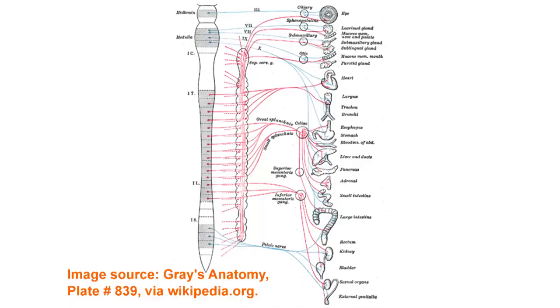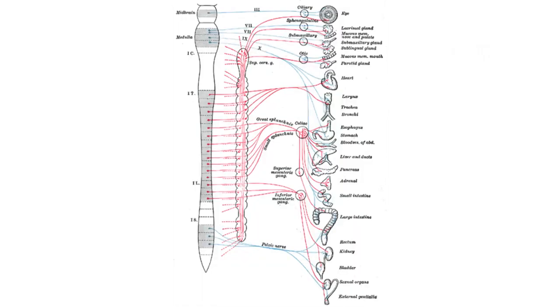That takes us through the 31 pairs of spinal nerves and the 12 pairs of cranial nerves. Now we come to the third aspect of the peripheral nervous system: the autonomic nervous system. The autonomic nervous system is made up of two major subdivisions — the sympathetic subdivision and the parasympathetic subdivision — innervating lots of internal organs including the liver, stomach, heart, lungs, pancreas, and bowels.